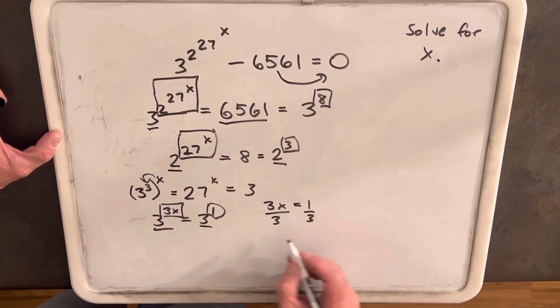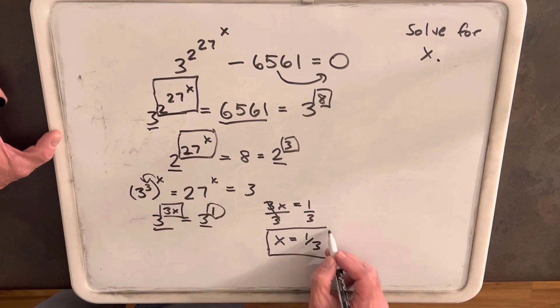Just divide both sides by 3. And we end up with x equals 1 third. That's it. Pretty quick problem.